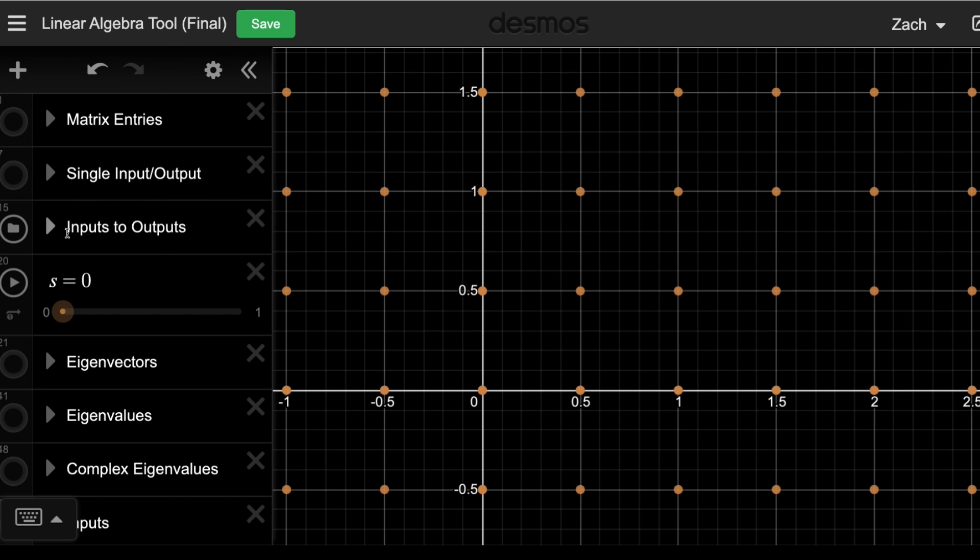Here you'll see a bunch of points that I preloaded into the program. So if you want to see what this matrix, just turn on the matrix entries folder, this matrix is going to do to all these points, what the new outputs are going to be when they're multiplied by this, you just hit the play button for this variable s.